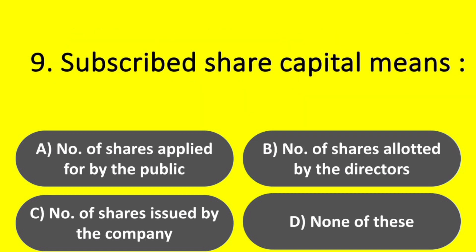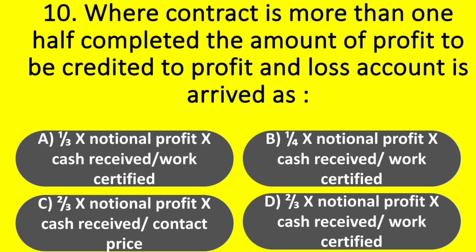Question. Subscribed share capital means: Option A – Number of shares applied for by the public. Option B – Number of shares allotted by the directors. Option C – Number of shares issued by the company. Option D – None of these. Answer: Option B – Number of shares allotted by the directors.